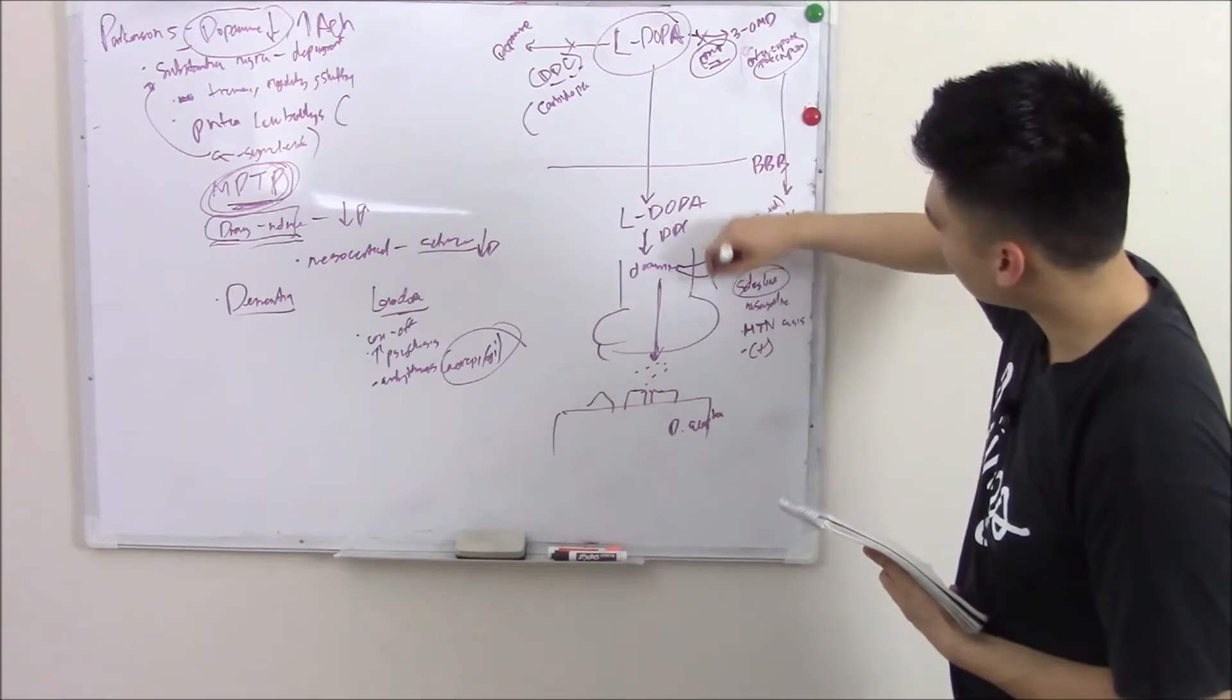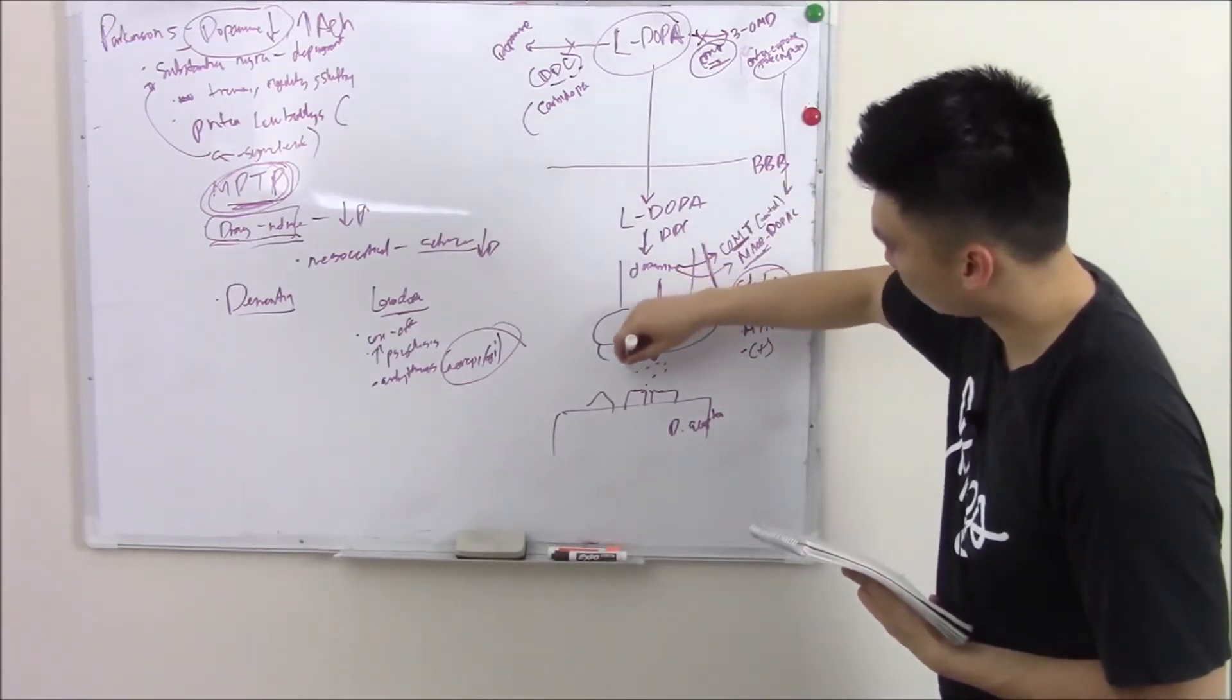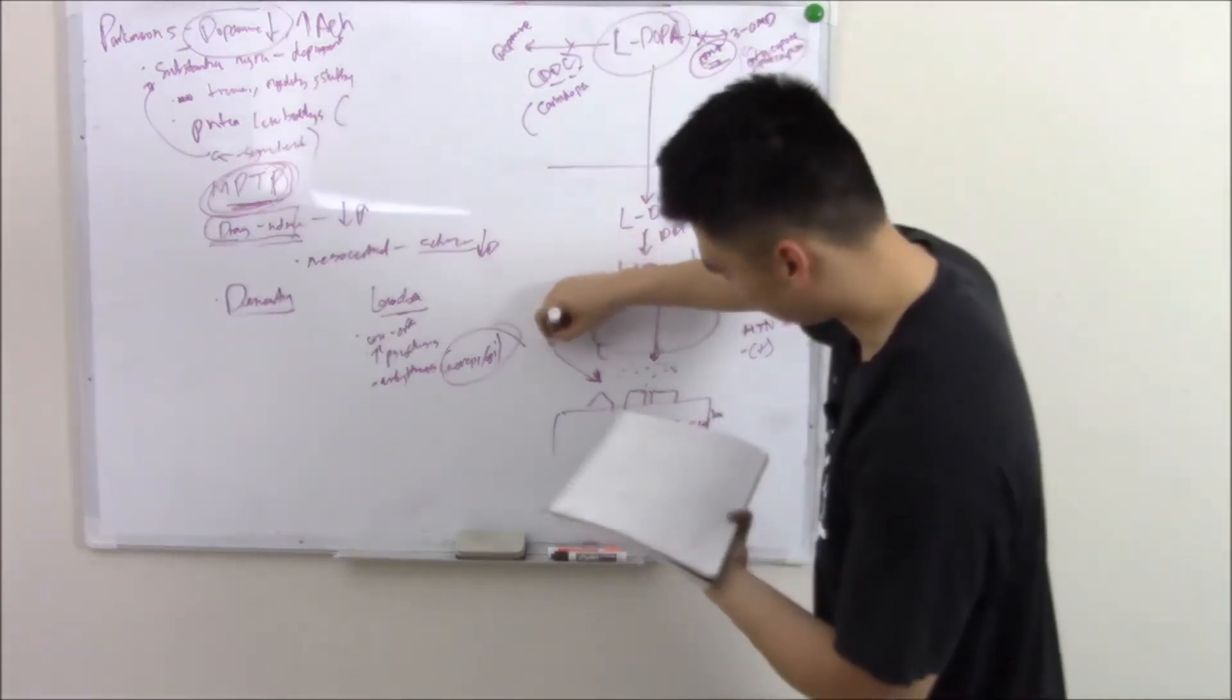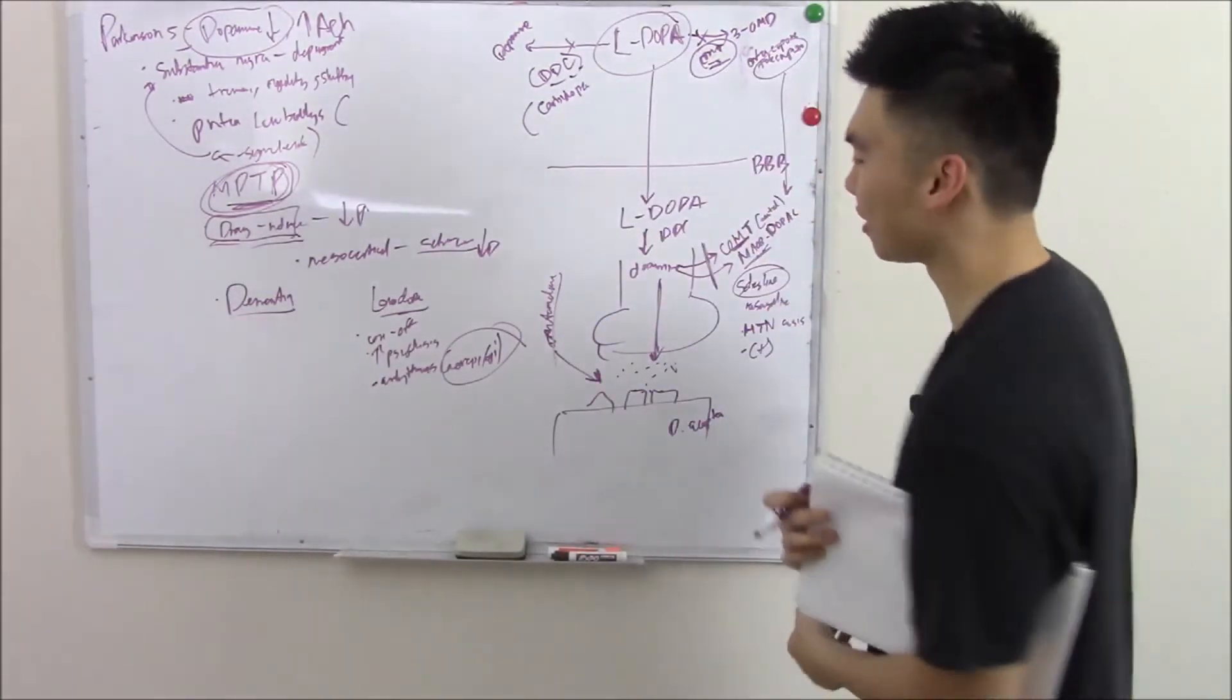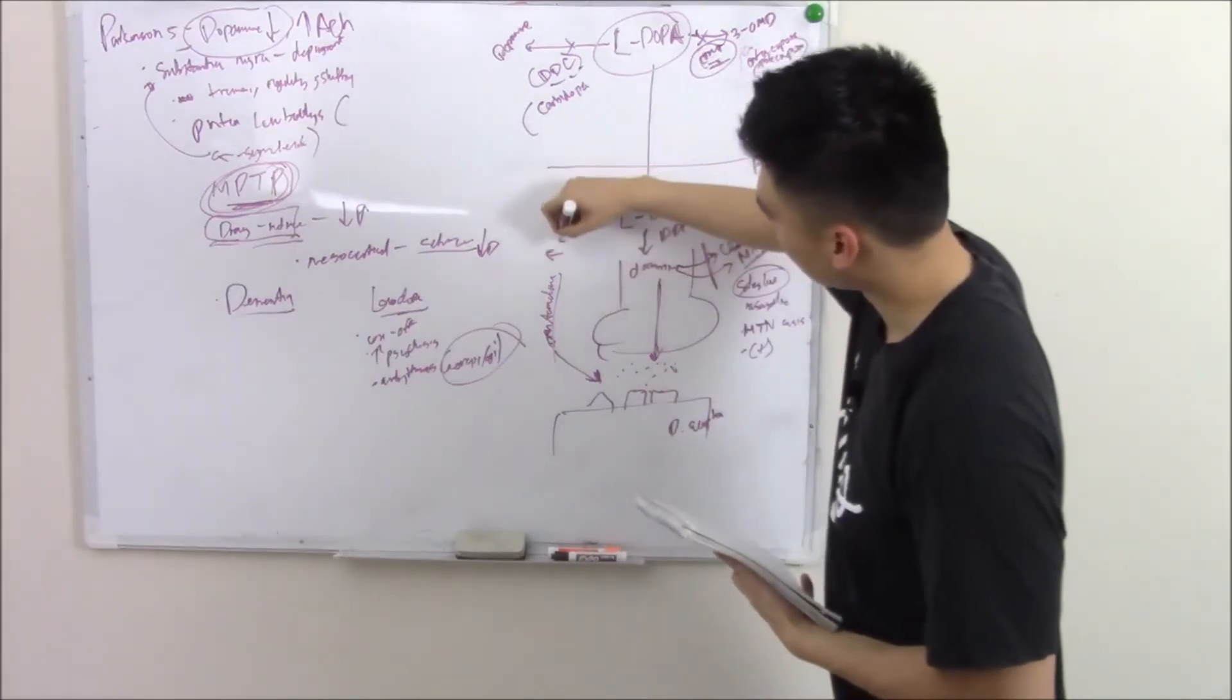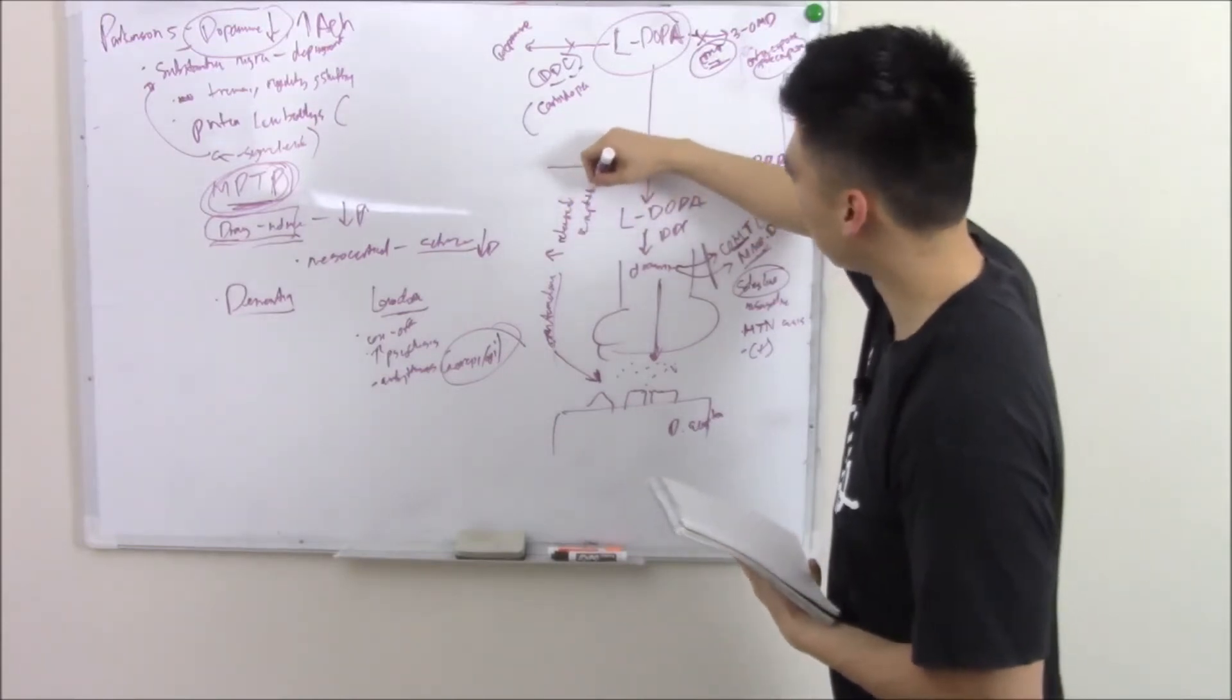So we block these nasty things that degrade our dopamine and we're able to release more. There's a drug that helps this release and stops this reuptake. And it's not what you suspect. It's amantadine. Isn't that the antiviral? Yes, it is. How it does this? No one's really sure. But hey, we're not complaining. So it can increase release and decrease the reuptake, which just means more dopamine in the synapse.